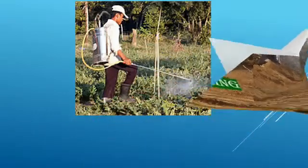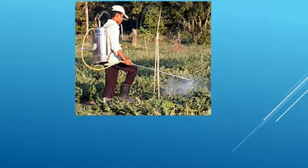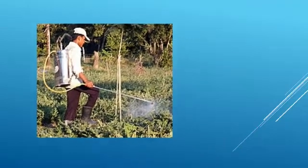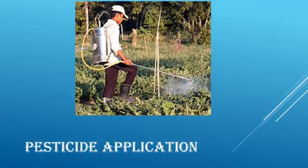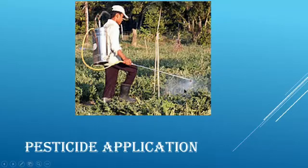The next practice is pesticide application. Pesticides are chemicals used to selectively kill agricultural insects or pests that can reduce crop production. However, when these pesticides are applied, they can sometimes kill the plants they are meant to protect. Pesticides can accumulate in the soil and result in a change in the pH of the soil. They can also be washed into water bodies, resulting in water pollution.